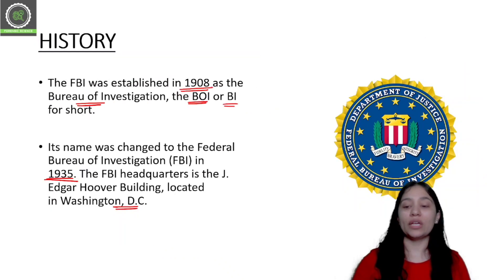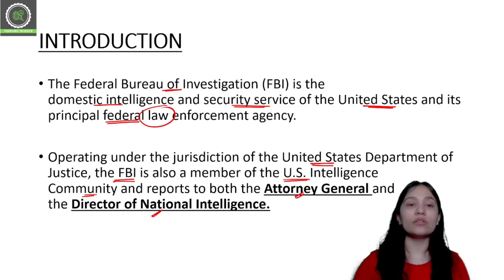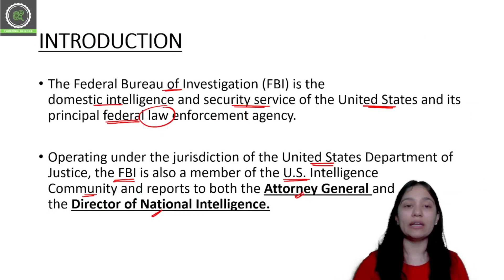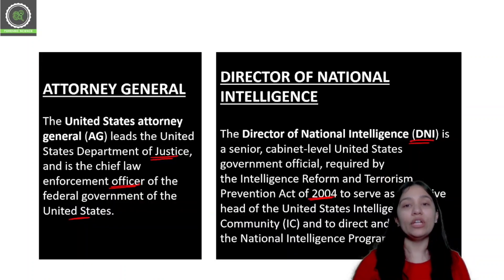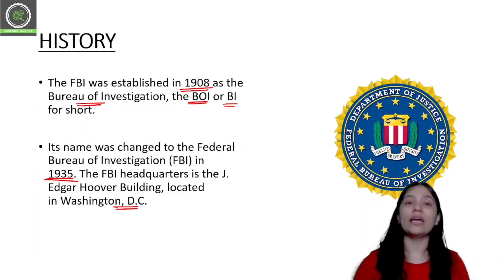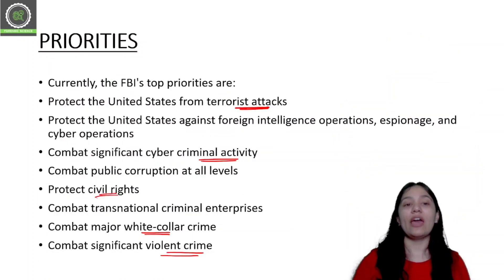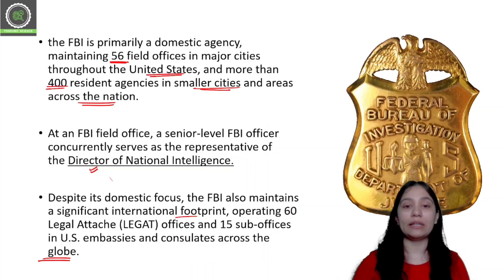So these are all the areas where FBI works, and these are also its priorities. FBI prioritizes all these areas and works across all of them. We are done with the topic - FBI introduction, reporting structure, history, and priorities have all been covered.